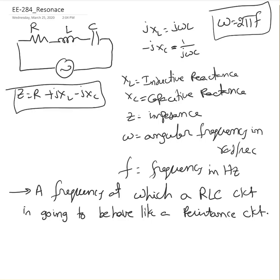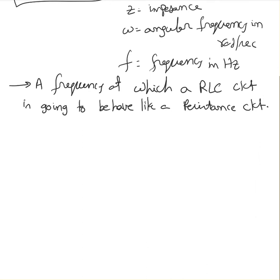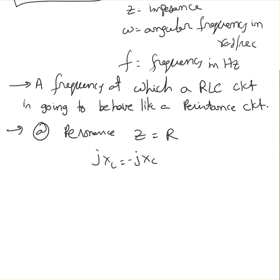If you look at this equation, as frequency changes — as frequency increases — j·XL is going to increase and j·XC is going to decrease. So at one point they are going to meet, and that frequency is called the resonant frequency. At resonant frequency, the impedance equals R, because j·XL equals j·XC, so they cancel, meaning XL equals XC.